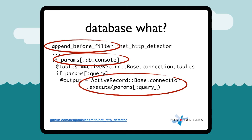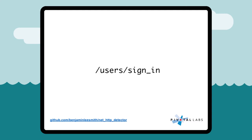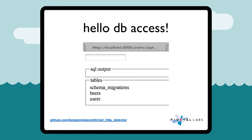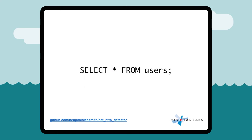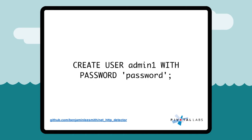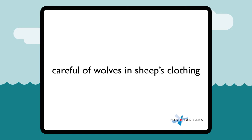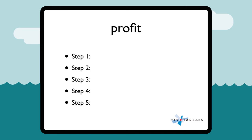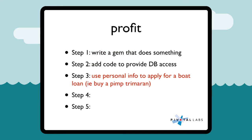If you take a normal Rails route - such as user sign-in or any other route you have - and you add this little db_console param, you'll get a nice little interface with database access. So now you can do things like show me all the users, make myself an admin, make a database user. The moral of this story: be careful of wolves in sheep's clothing. With that database access, you can get personal info on people, apply for a boat loan, profit, and then get out of here to a beach somewhere.